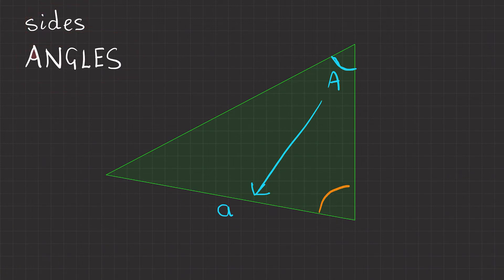Secondly, we'll show angle B, which I'm going to write here. So uppercase B, and then the side is opposite it, which is here, so lowercase b.